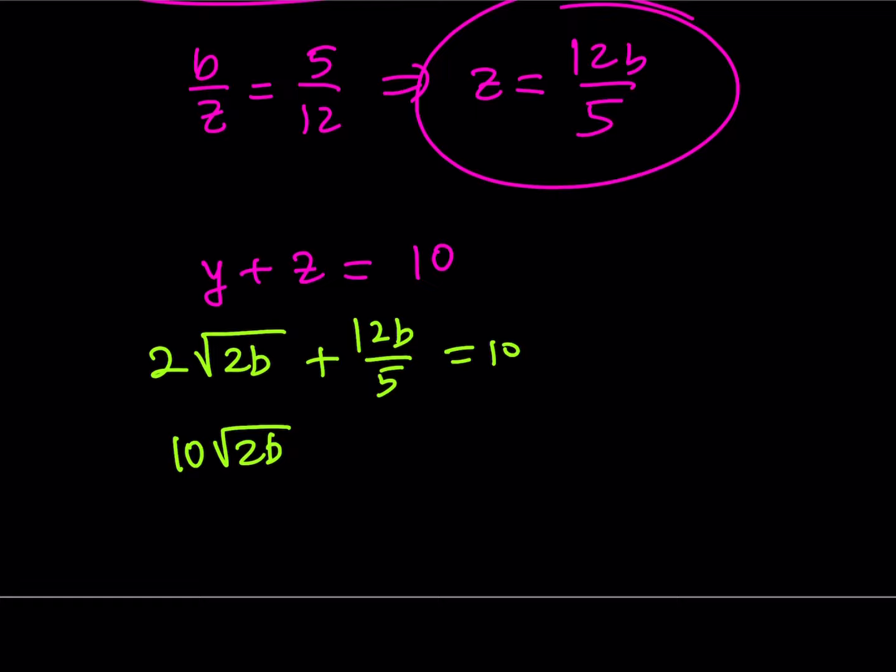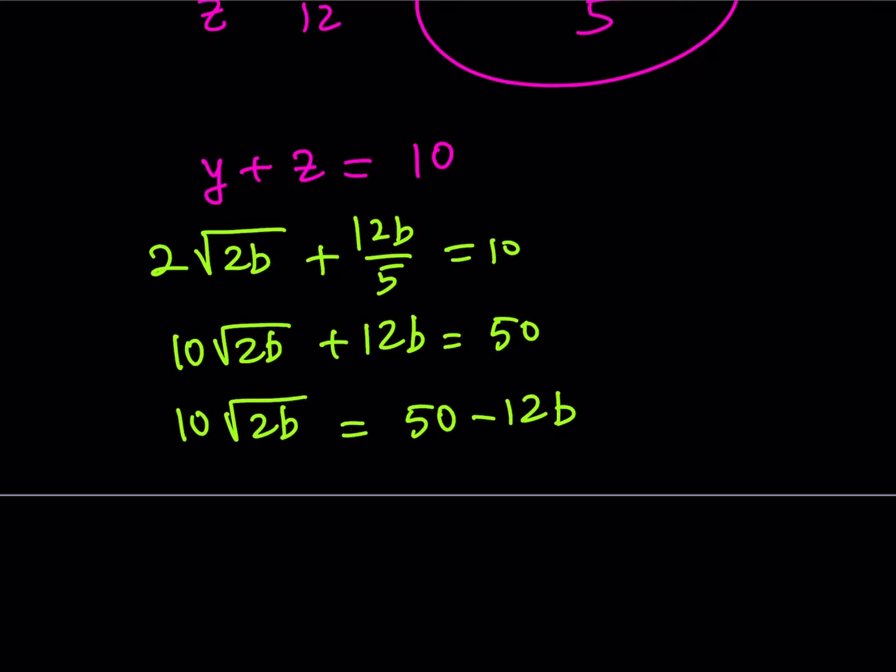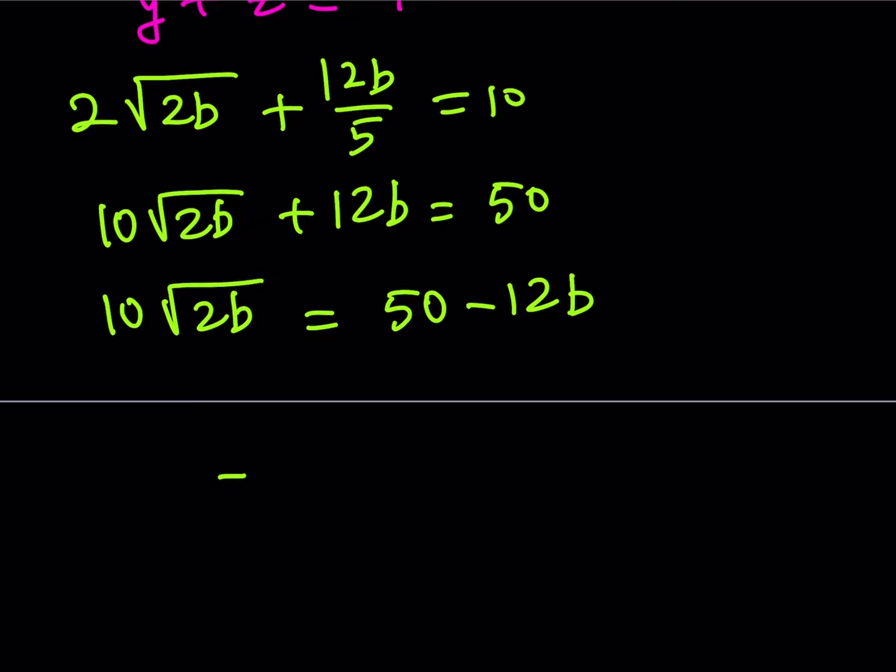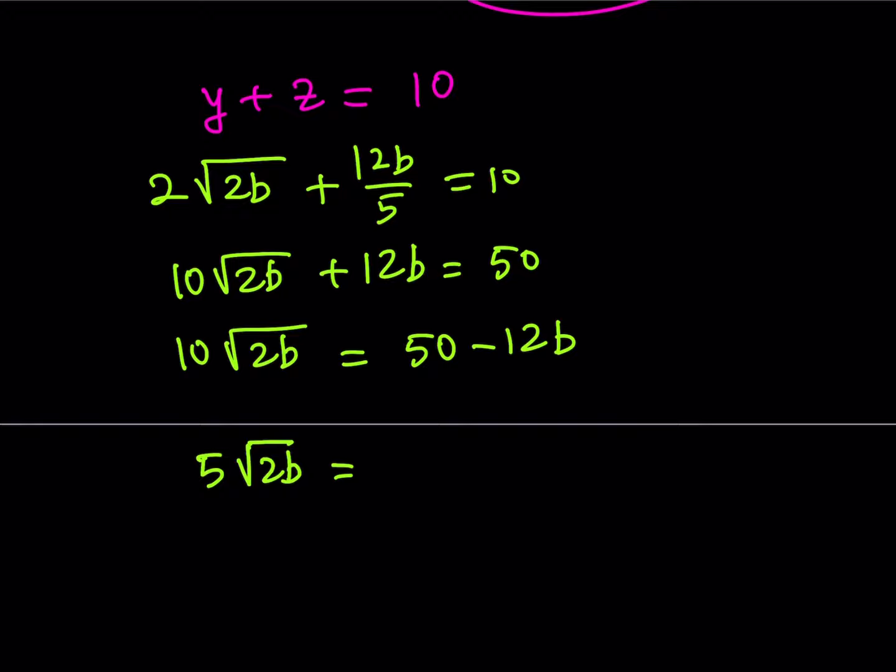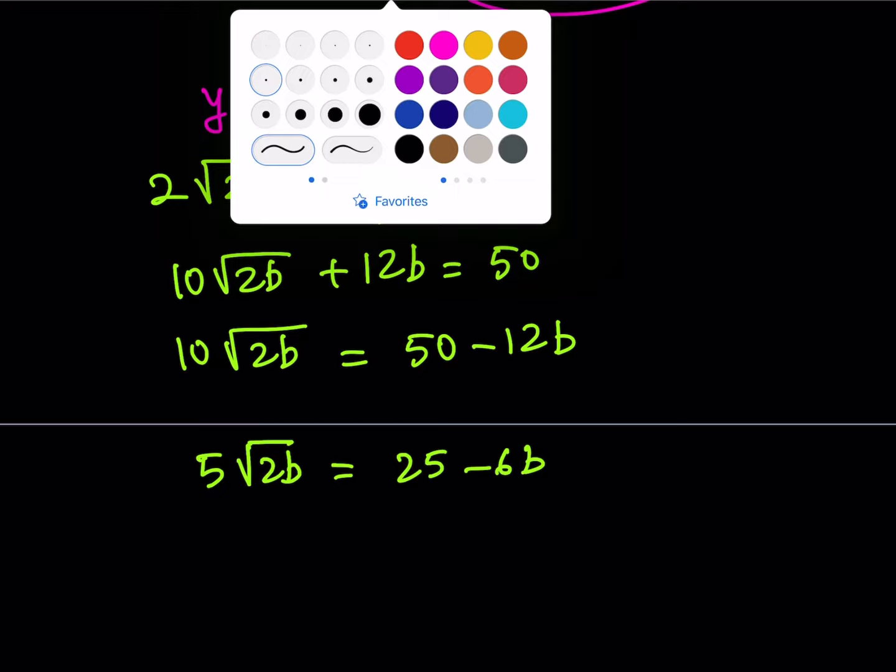One of the things I can do is I can actually go ahead and multiply everything by 5. So, it's going to be 10 times the square root of 2b plus 12b is equal to 50. Now, I'd like to isolate the radical, obviously, so that I can square both sides. But before I do, let me go ahead and divide both sides by 2 because it's going to make things a little easier. The numbers are kind of too large here, so let's make it a little smaller. So, what I'm going to do here is divide. 5√(2b) = 25 - 6b, and then I'd like to square both sides.